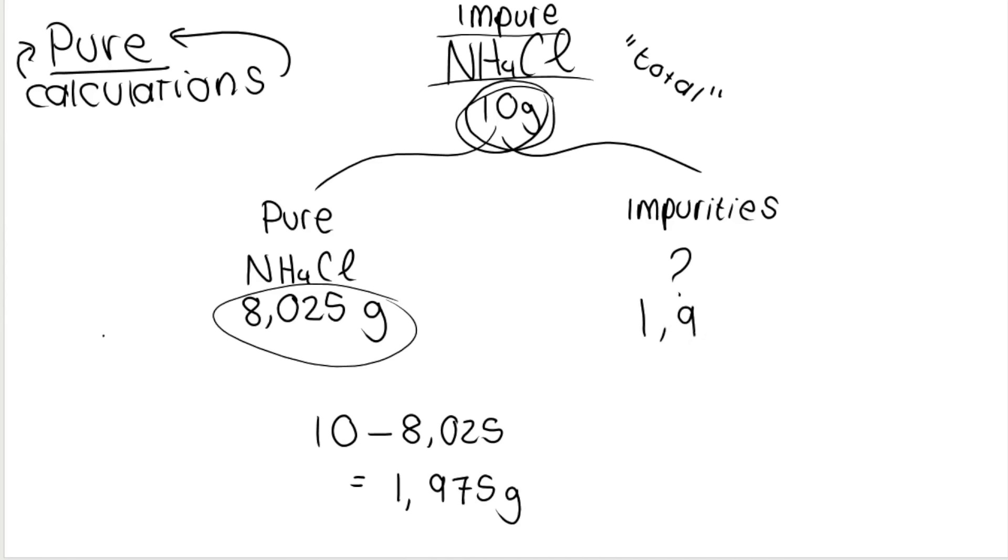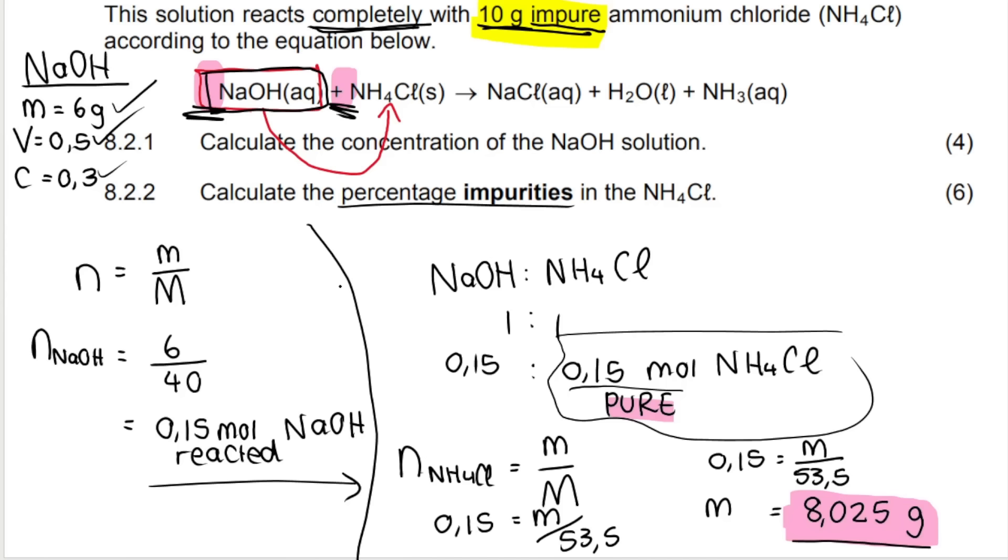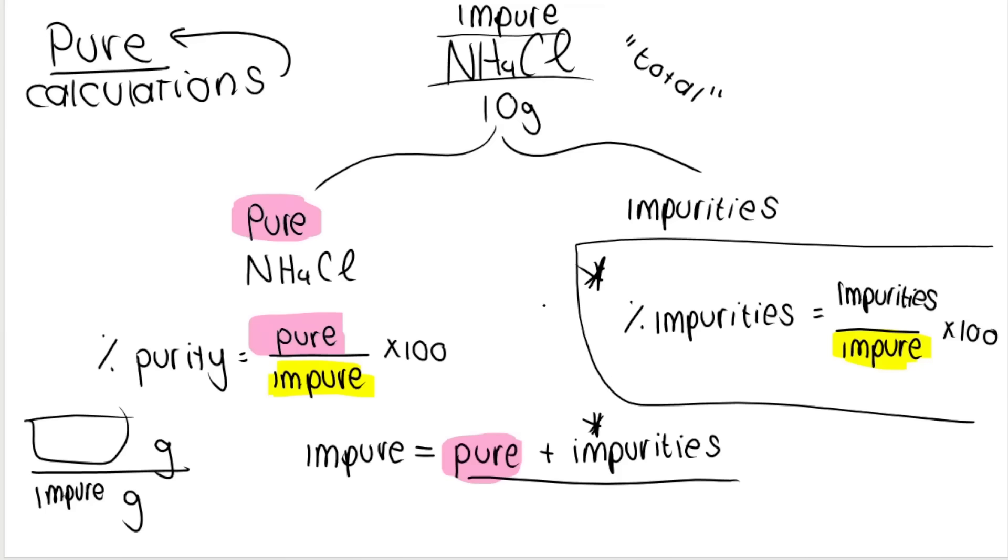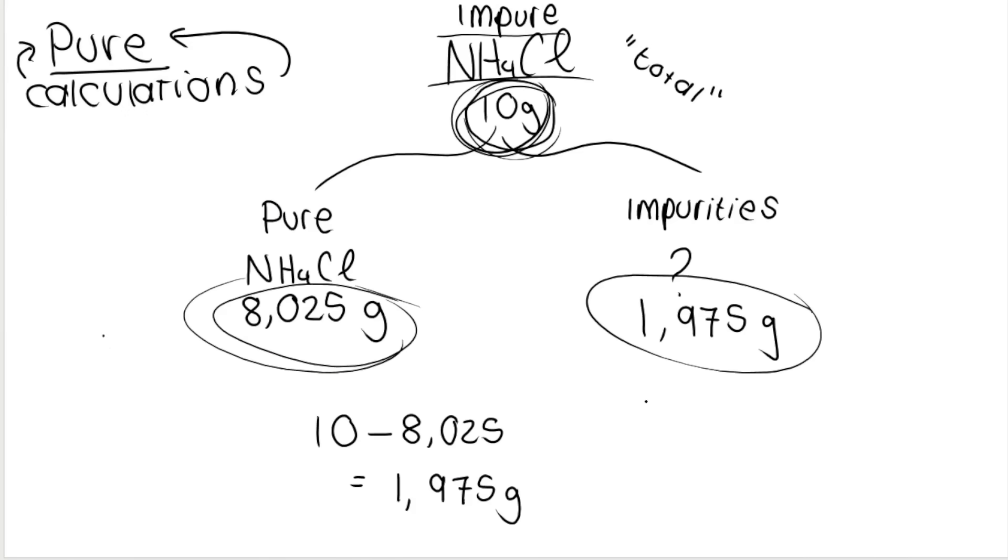That is the amount of impurities. And again, it makes sense because if I add these two things together, it needs to give me the total. Now, the question wanted the percentage impurities. So we will be using this formula. The percentage of impurities is you put the amount of impurities at the top. So 1.975 divided by your total or your impure times 100. And I got 19.75%.